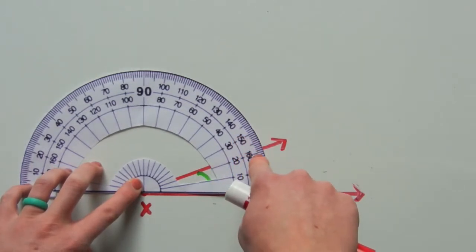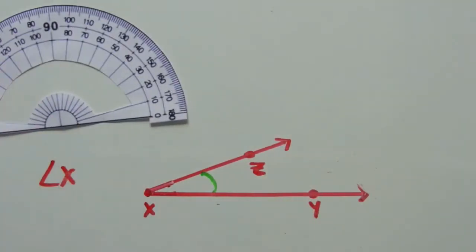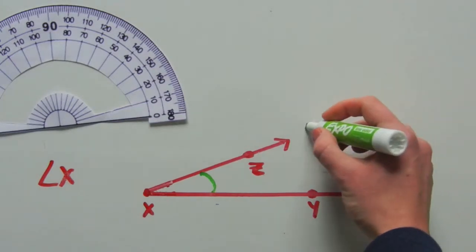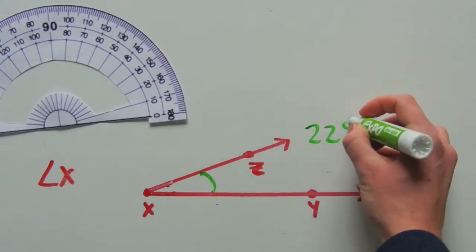Because the tick marks on my protractor are broken up into tens. So this is 20, and then 21, 22. So the measure of angle X would be 22 degrees.